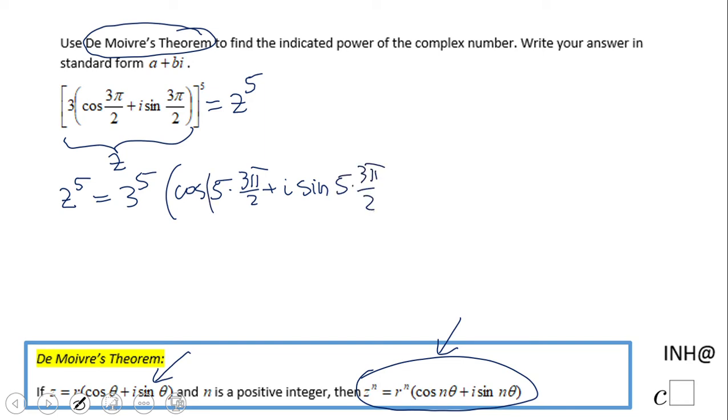If you want to use parentheses it's fine, if you don't it's okay. So we can simplify a little bit here: 3 to the fifth power is 243, and here we have cosine of 15π over 2 plus i sine of 15π over 2.